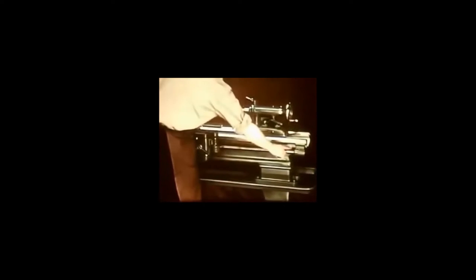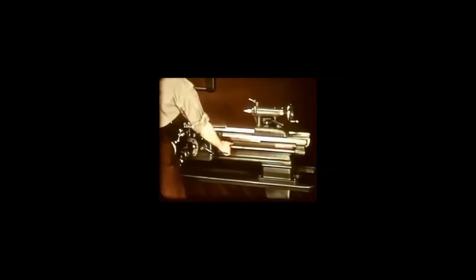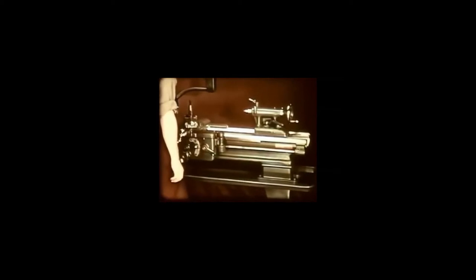The lathe has four basic parts. There is the bed, which is the foundation upon which the lathe is built. The three inverted V's and the flat surface are called the bed ways. They are used to align the important units of the lathe with extreme accuracy.